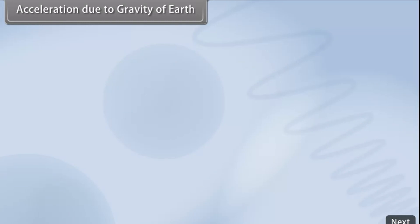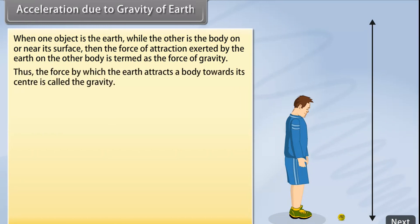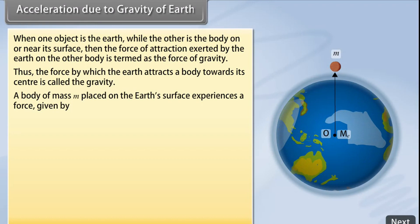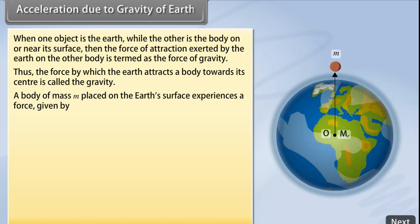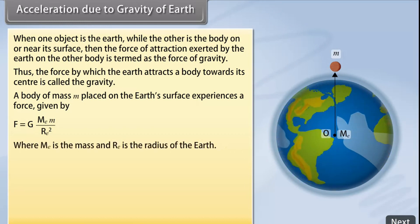Acceleration due to gravity of Earth: When one object is the earth while the other is the body on or near its surface, then the force of attraction exerted by the earth on the other body is termed as the force of gravity. Thus, the force by which the earth attracts a body towards its center is called the gravity. A body of mass M placed on the earth's surface experiences a force given by F is equal to G into M E M upon R E square, where M is the mass and R E is the radius of the earth.